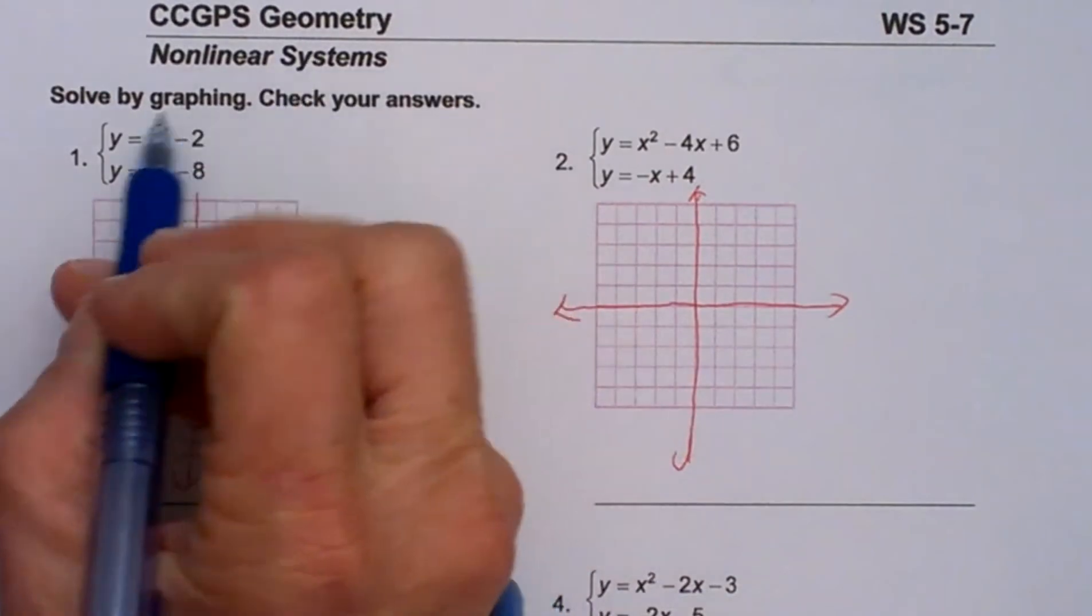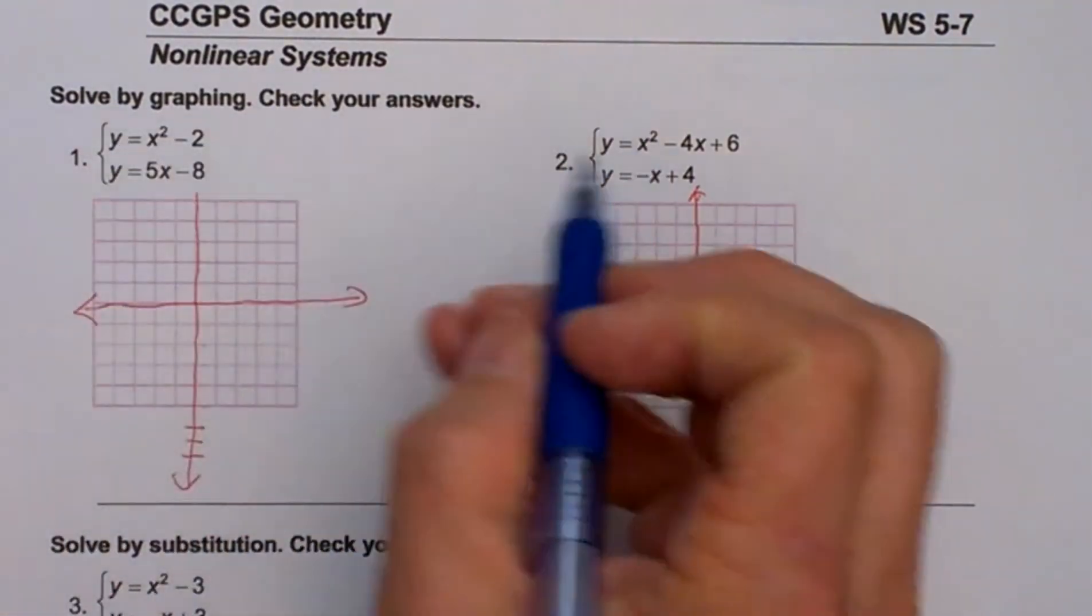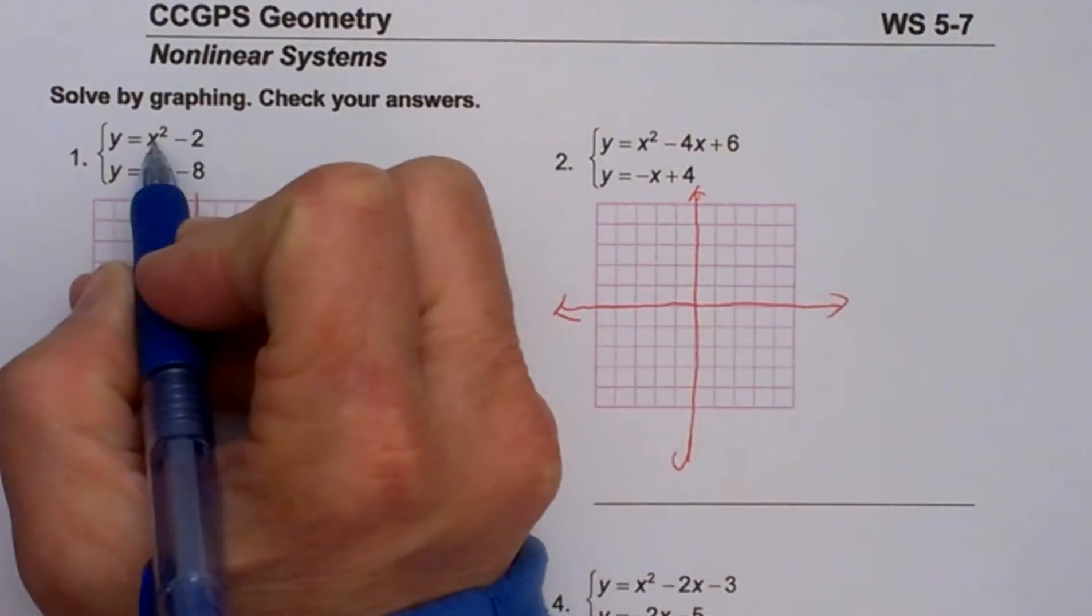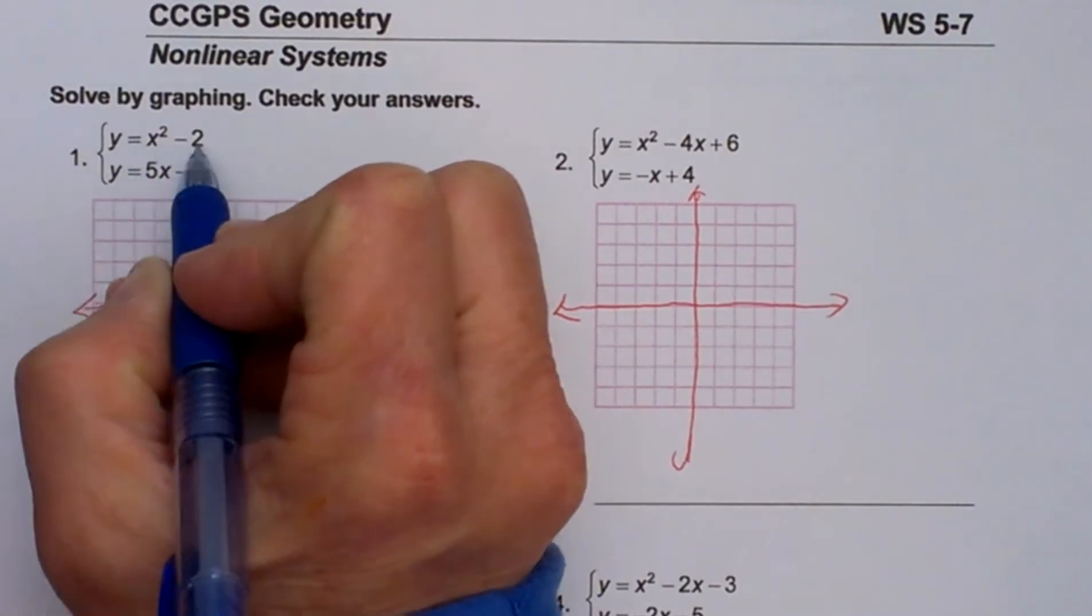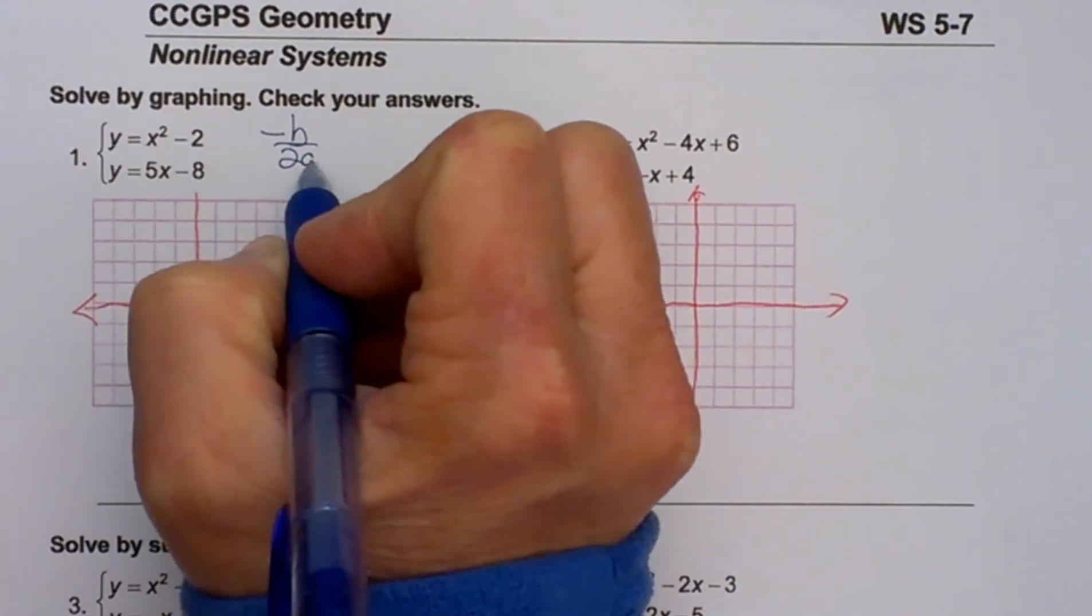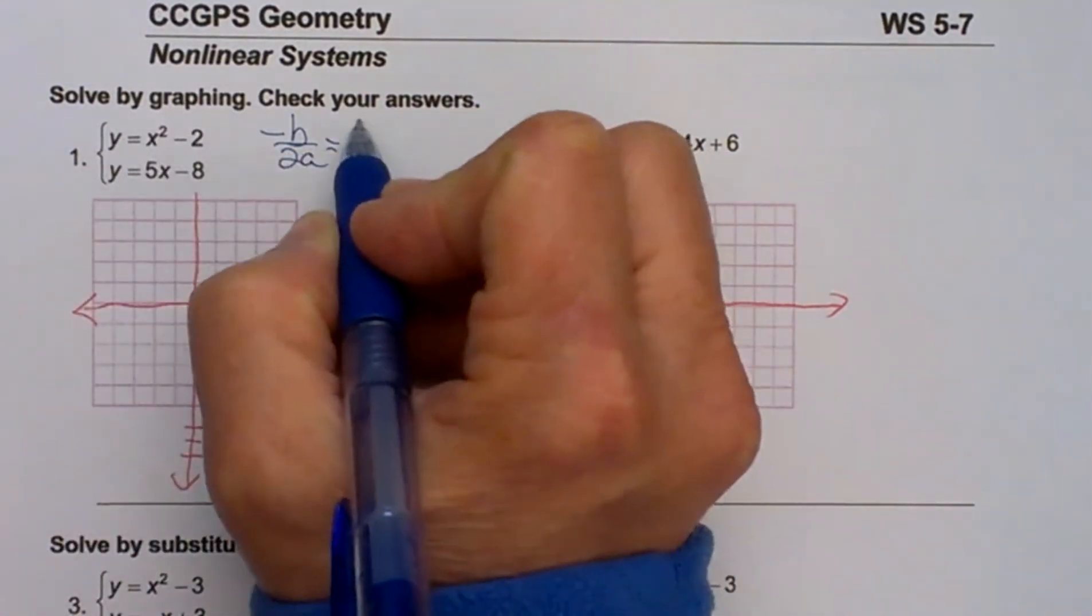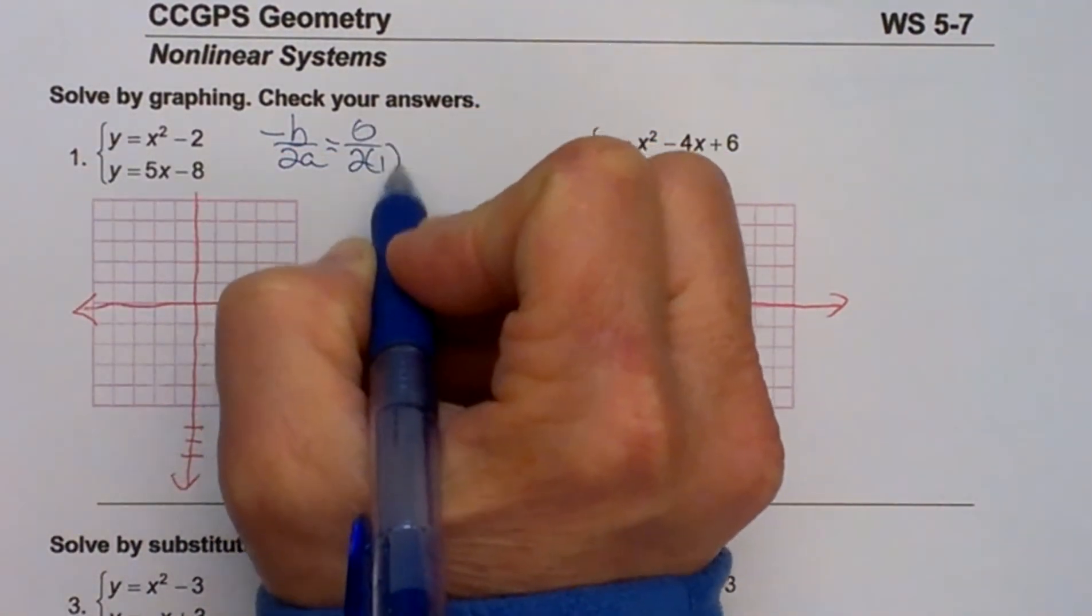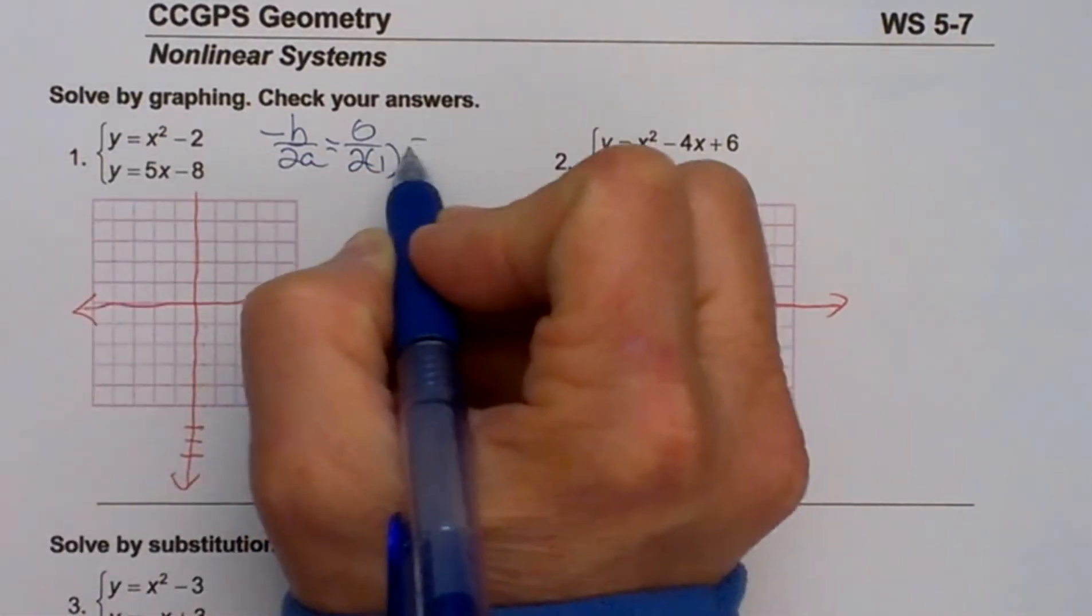Let us start off by graphing our parabola. We have a parabola that is facing up because our lead coefficient is 1, and we are going to find the vertex using negative b over 2a. Our b in this case is 0, so 0 over 2 times 1, which is the lead coefficient a, is 0.